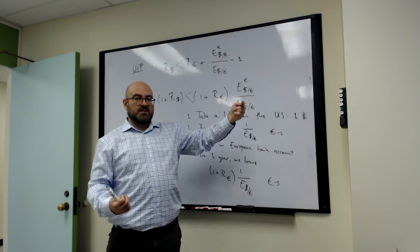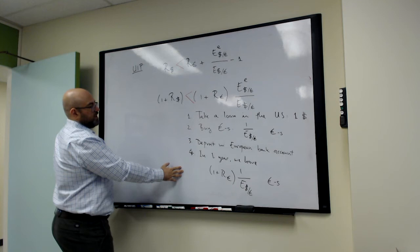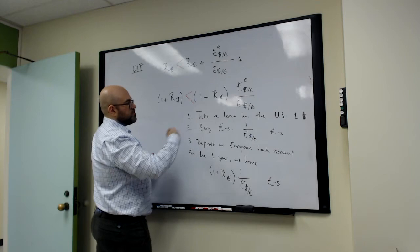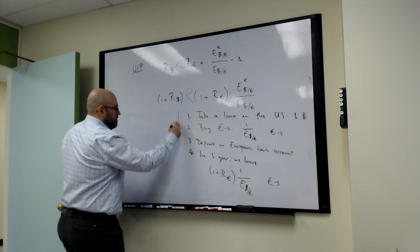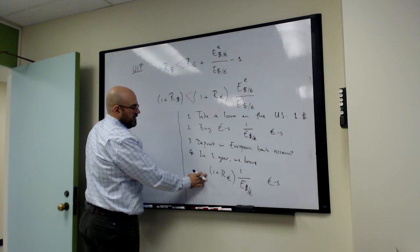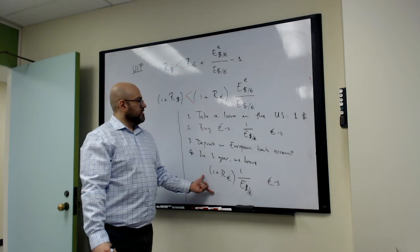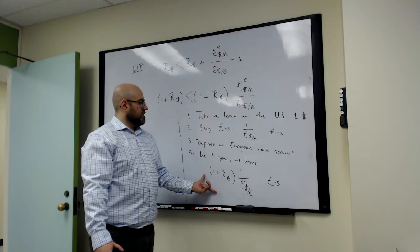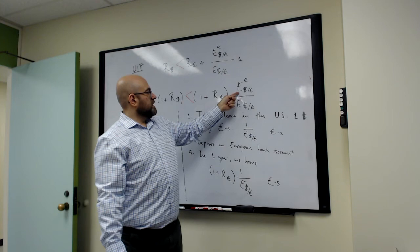When I want to evaluate whether this strategy will allow me to break even or to make money or lose money, I need to think about what are my expectations today about the exchange rate in one year. So the point of that remark is that I will evaluate this future euro quantity based on my beliefs today. So I have euros, and the question is how many dollars can I buy with these euros?